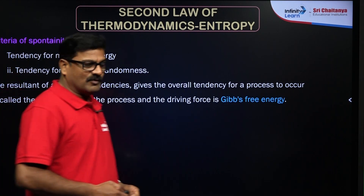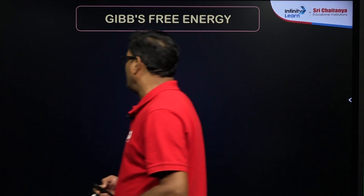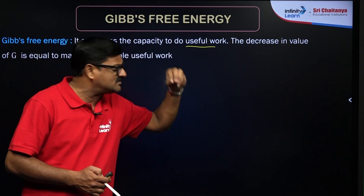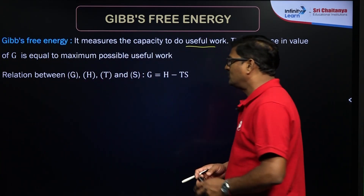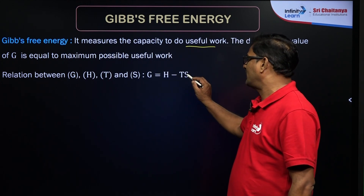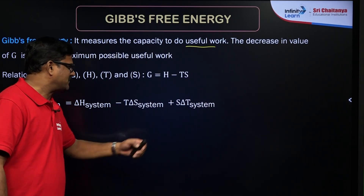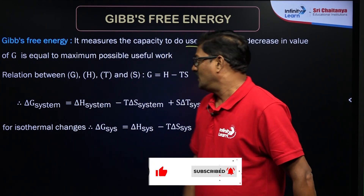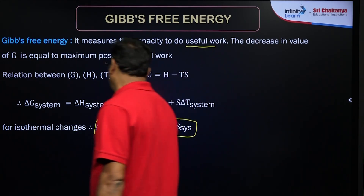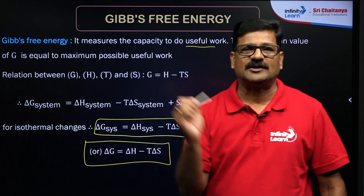Gibbs free energy change is the energy actually used for the work done by a system — it measures the capacity to do useful work. The relation between Gibbs free energy, enthalpy, temperature, and entropy is given as: G = H − TS. Therefore, ΔG_system = ΔH_system − T·ΔS_system. This is the Gibbs-Helmholtz equation, and direct questions can be expected from this equation in competitive examinations, especially NEET.